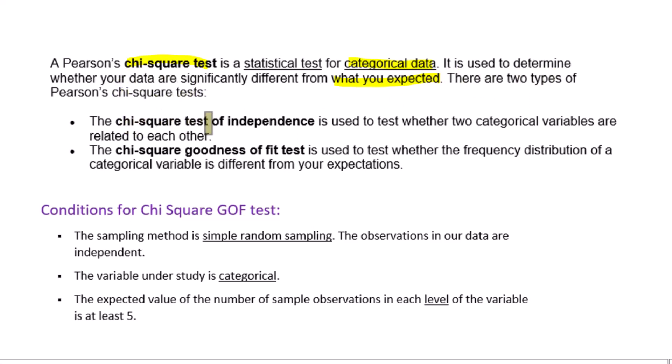There are two types of Pearson's chi-square tests. The chi-square test for independence is used to test whether two categorical variables are related to each other. The chi-square goodness of fit test is used to test whether the frequency distribution of a categorical variable is different from your expectations.